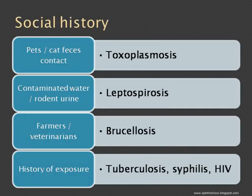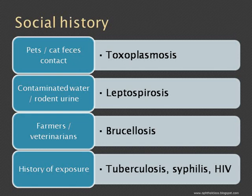Social history should be taken laboriously because it can really tell us which investigation we should go for. Contact with pets and cat feces can give rise to toxoplasmosis — especially pregnant women in contact with cats can transmit toxoplasmosis to the fetus, and the child is born with congenital toxoplasmosis that can trouble them lifelong as the organism remains active in the retina, causing retinitis at various intervals. Contact with contaminated water or rodent urine causes leptospirosis. Farmers, veterinarians, or hikers in the woods can have brucellosis, and occupational exposure raises the risk of tuberculosis, syphilis, and HIV.